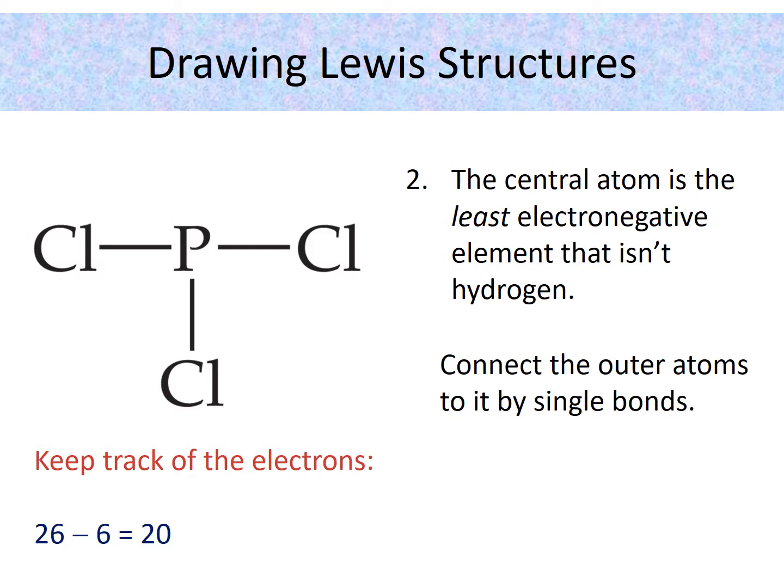So once we have the skeletal structure, then you connect the outer atoms, the peripheral atoms, to the central atom with single bonds. Now you have to keep track of every time you use an electron. So remember, a bond is two electrons. So we have used three bonds, which gives us a total of six bonding electrons.